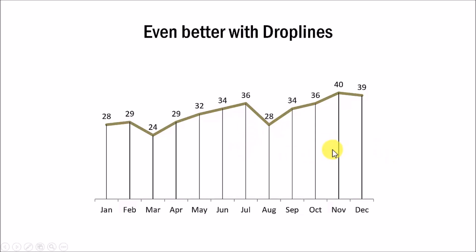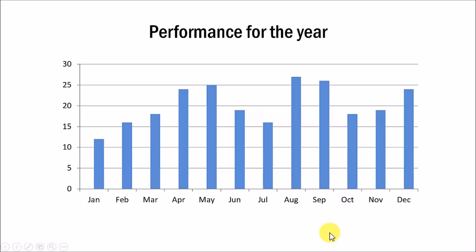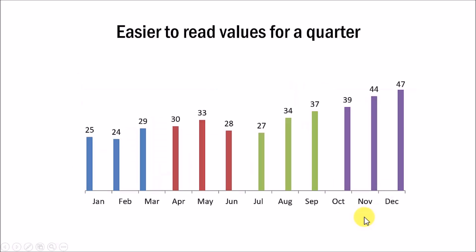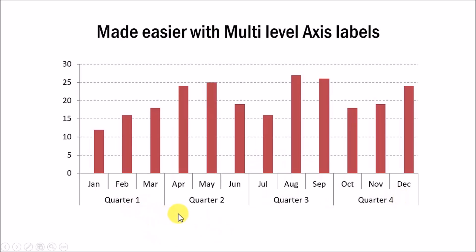This simple tweak can come in quite handy when your chart has a large number of data points. The usual books and courses teach you how to create a basic column chart like this. As you can see, it is not very easy for someone to compare the performance across quarters. What if we could improve this chart by providing different colored columns for each of the quarters? It becomes much easier for the audience to compare the performance across quarters, or you can add a multi-level axis that makes it even easier to compare performance across quarters.